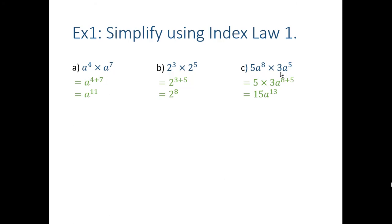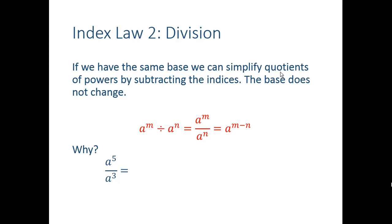Let's learn a new index law, so write this down in your notes. Big heading for index law 2, which is on division. You can pause at any time if I'm talking a little bit too fast. So if we have the same base, we can simplify quotients. Remember quotients is dividing. We can simplify quotients of powers by subtracting the indices. Multiplication we add, division we subtract. Again, the base does not change. So the rule looks like this: a to the m divided by a to the n. It might also be written as a fraction. Those two are completely interchangeable, is a to the m minus n.